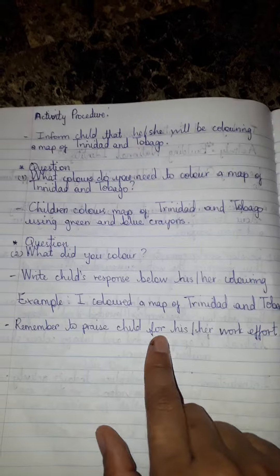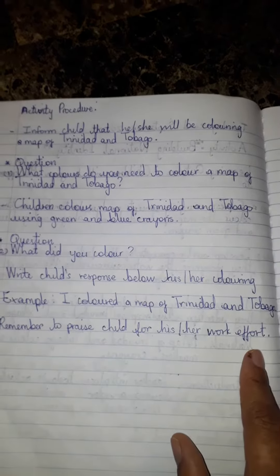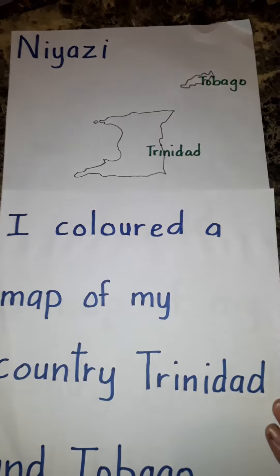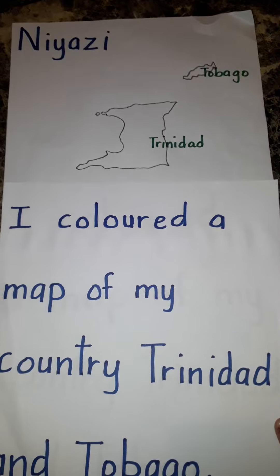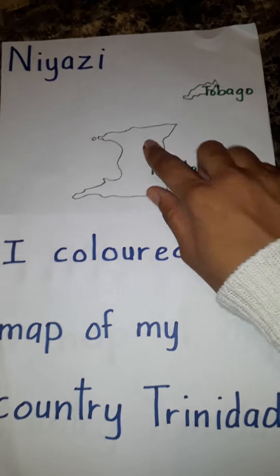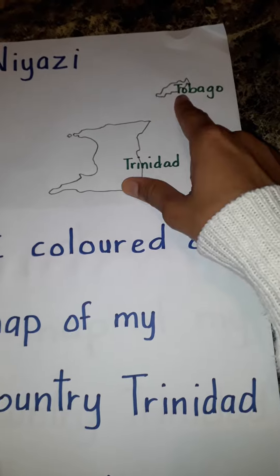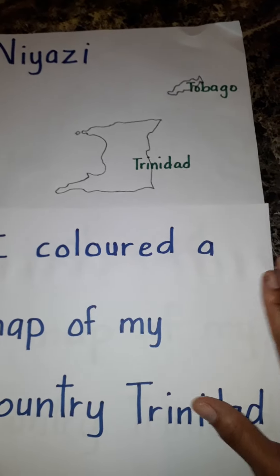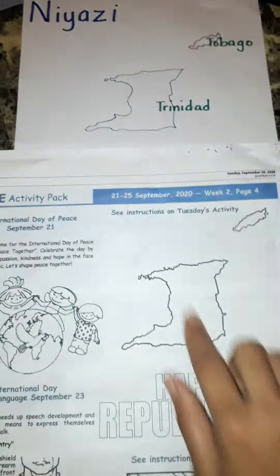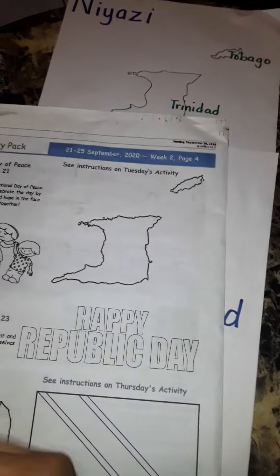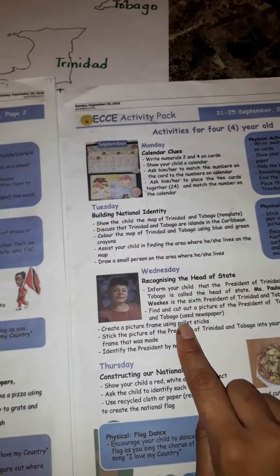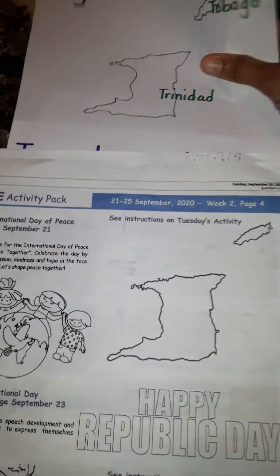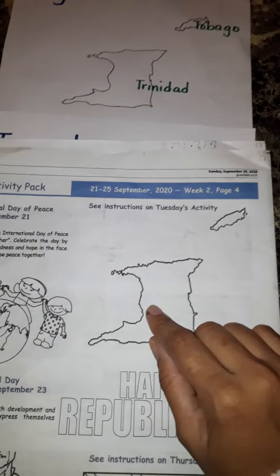Remember to praise the child for his or her work effort. So here I have an example of what the color sheet would look like — the map showing Trinidad and Tobago. I traced this from the Guardian Activity Pack. This is the Guardian Activity Pack, but when we turn this page, you will see that there are a few activities still that we need to do for this week. So I chose not to cut it out so we can save that information. I used a photocopy paper and traced the map onto the paper.